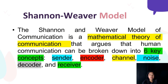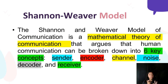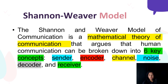We also have the Shannon-Weaver model. The Shannon and Weaver model of communication is a mathematical theory of communication that argues that human communication can be broken down into six key concepts. Unlike the linear model which only has three — sender, message, and receiver — this model involves six: the sender, the encoder, channel, noise, decoder, and receiver.